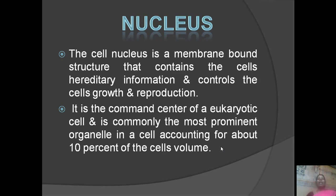The nucleus controls cell growth and reproduction. How is hereditary information controlling cell growth and reproduction? Cell division is controlled by a command that comes from the nucleus. The hereditary information means that the organism's characters are passed to different generations. It is the command center of the eukaryotic cell and the most prominent organelle, accounting for about 10% of the cell's volume.